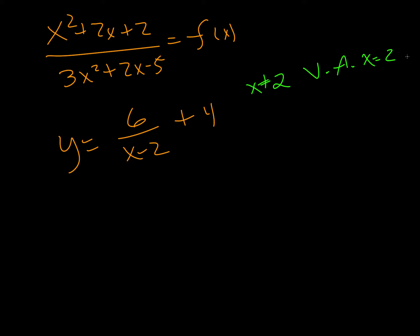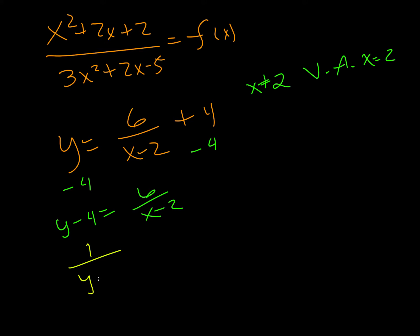Now, to find the horizontal asymptote, which is dependent on y, we solve for x. And so y minus 4 equals 6 over x minus 2. We want x on top, so we flip both sides of the equation. And then we multiply by 6. And then we add 2.